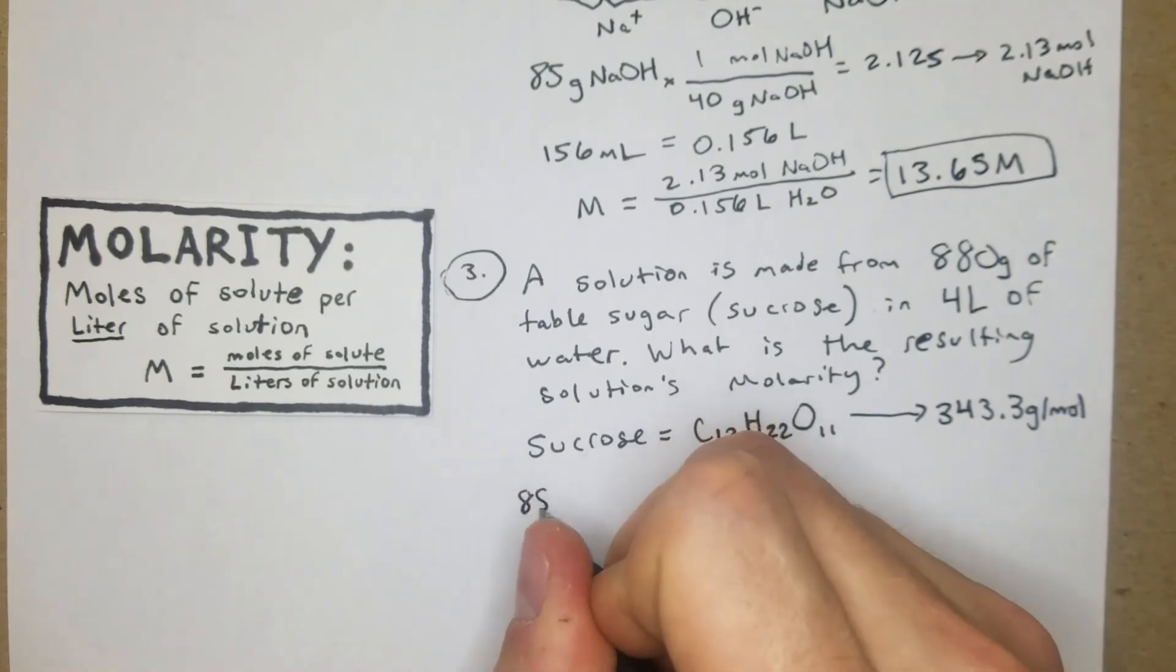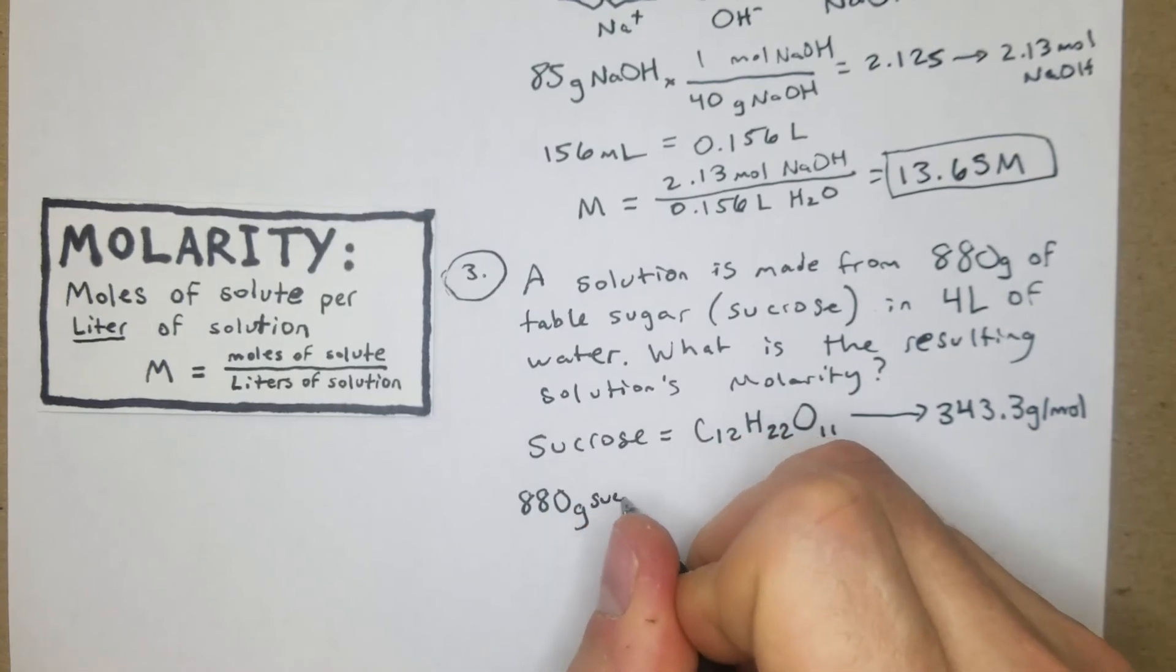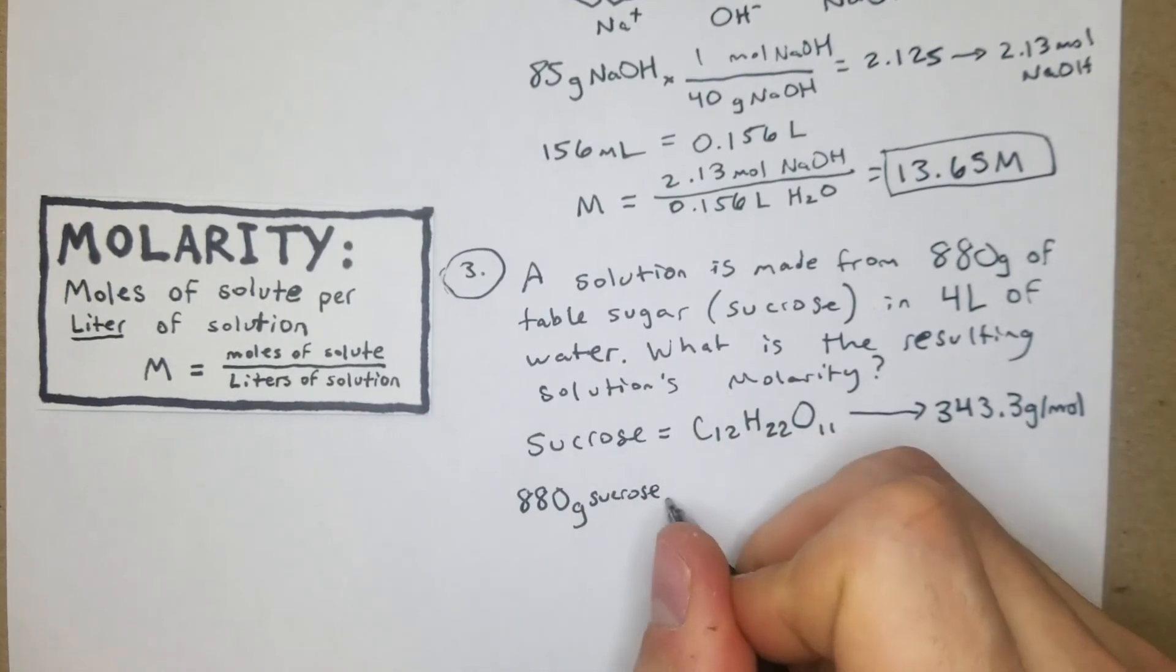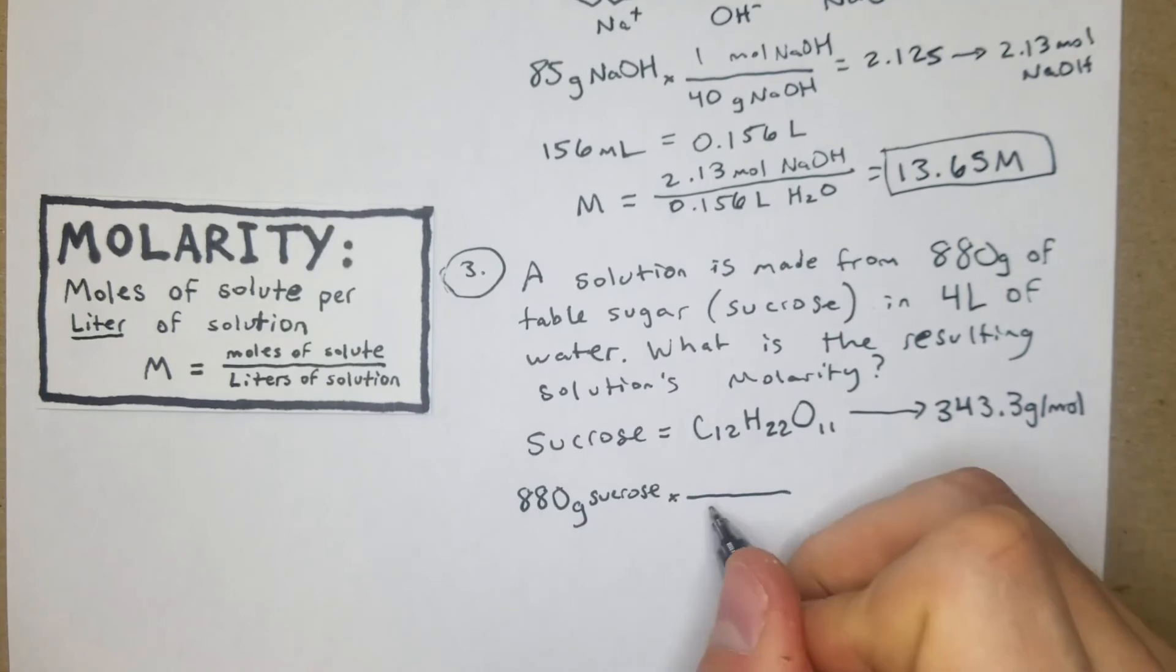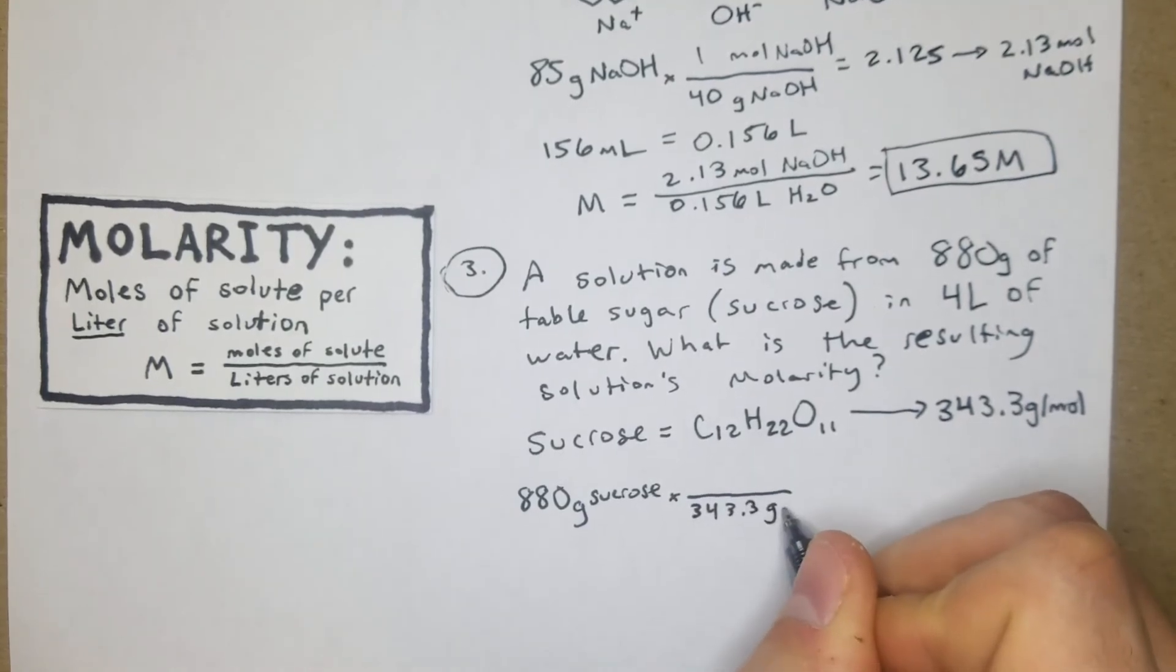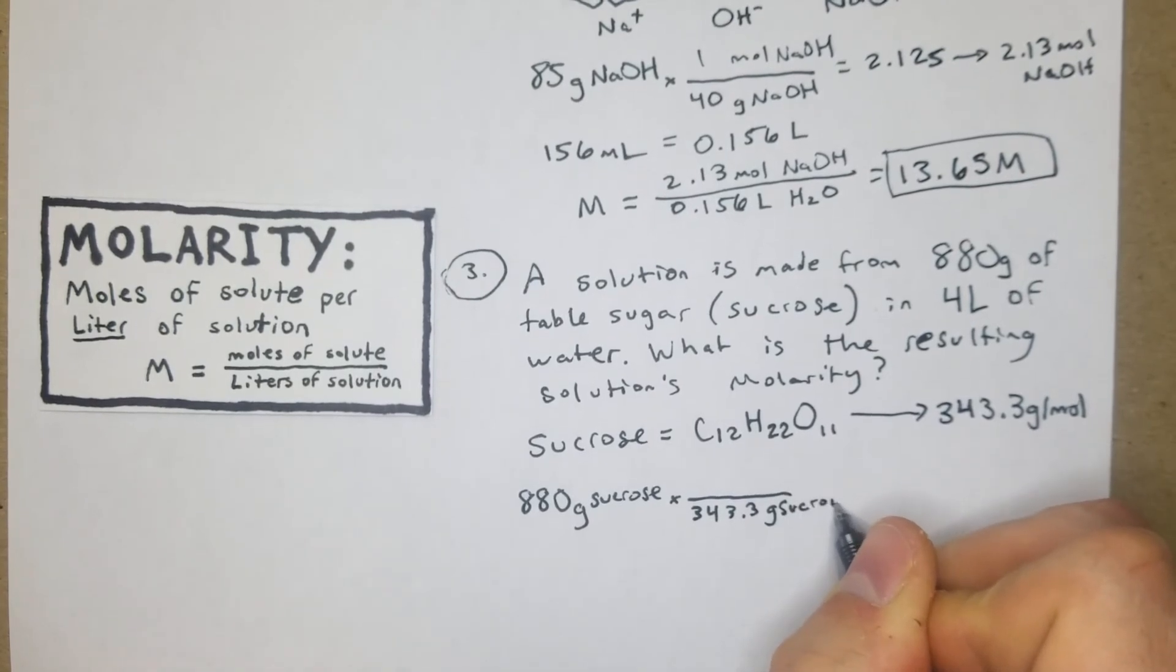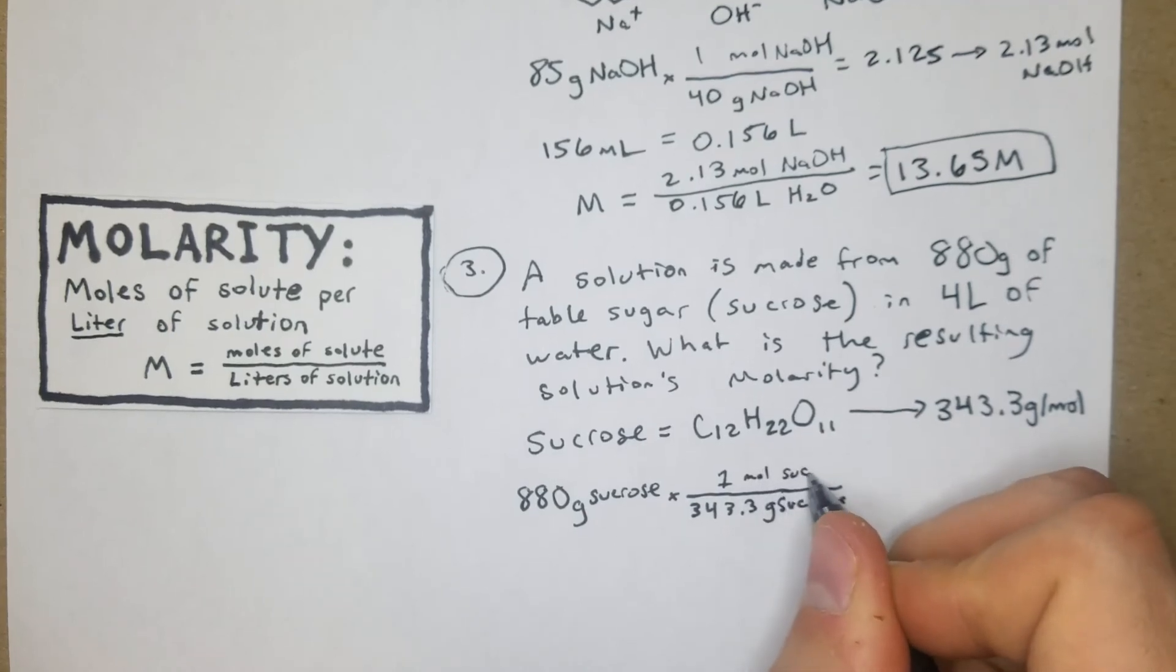Now we can go across like we usually do. We're going to start with what we have: 880 grams sucrose, and we'll figure out that's based on 343.3 grams sucrose per one mole of sucrose.